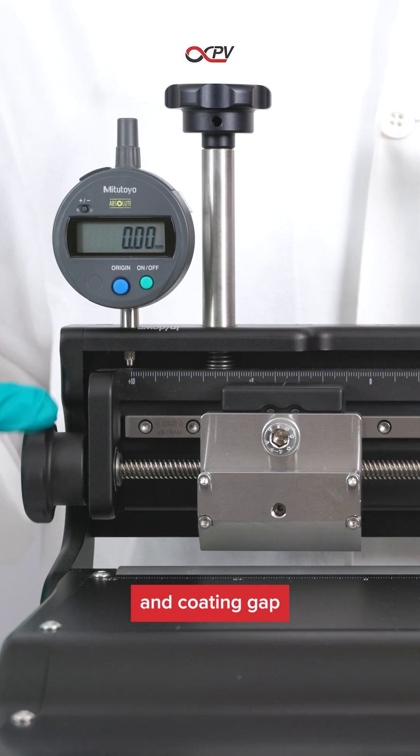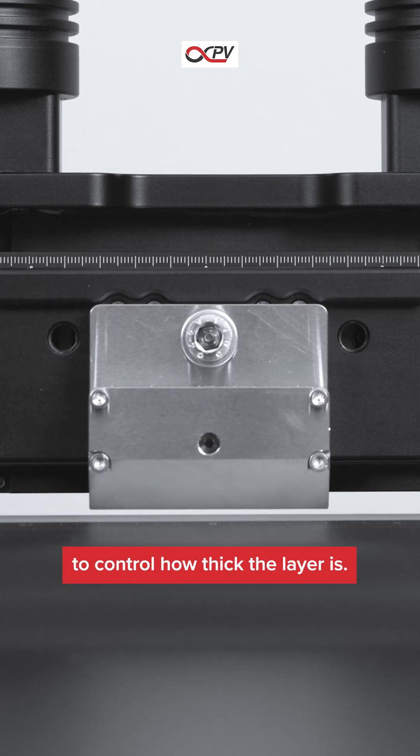During the process, you can adjust the position and coating gap of the slot die head to control how thick the layer is.